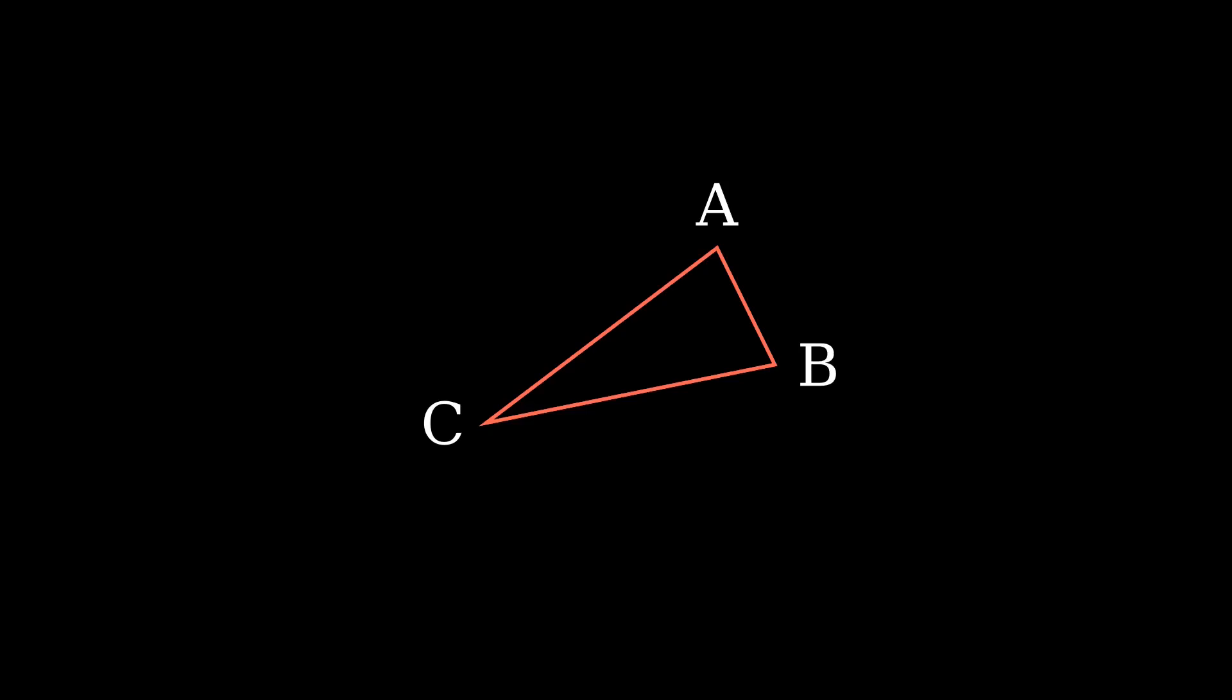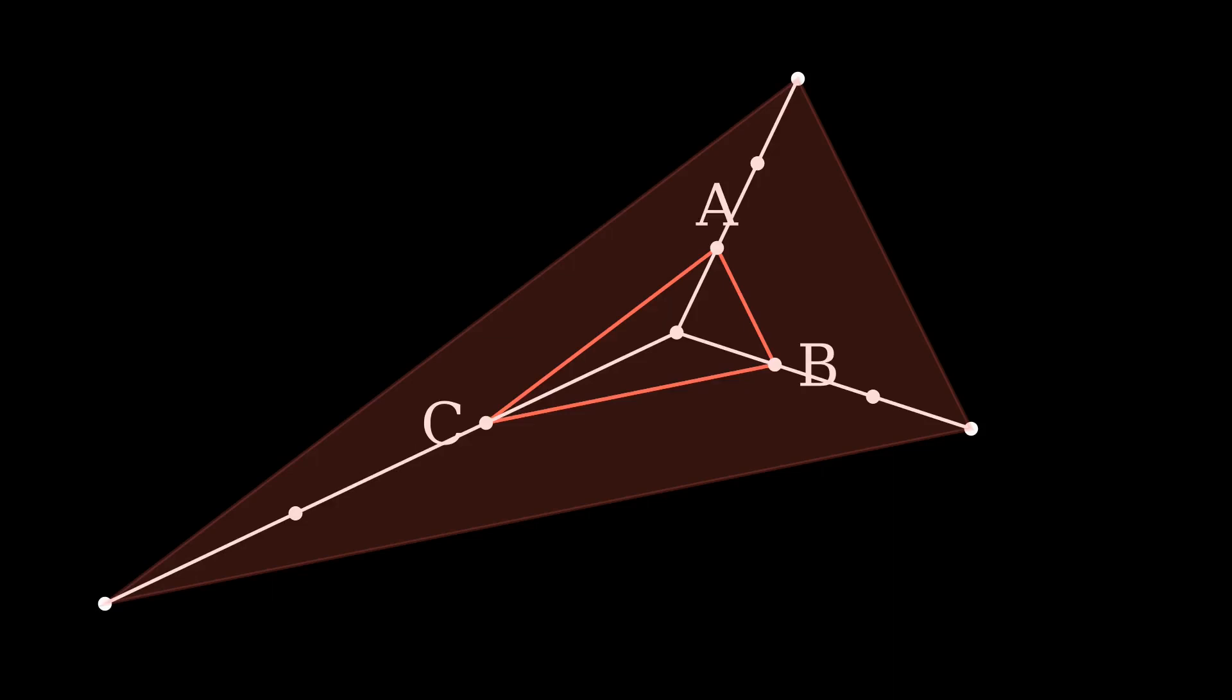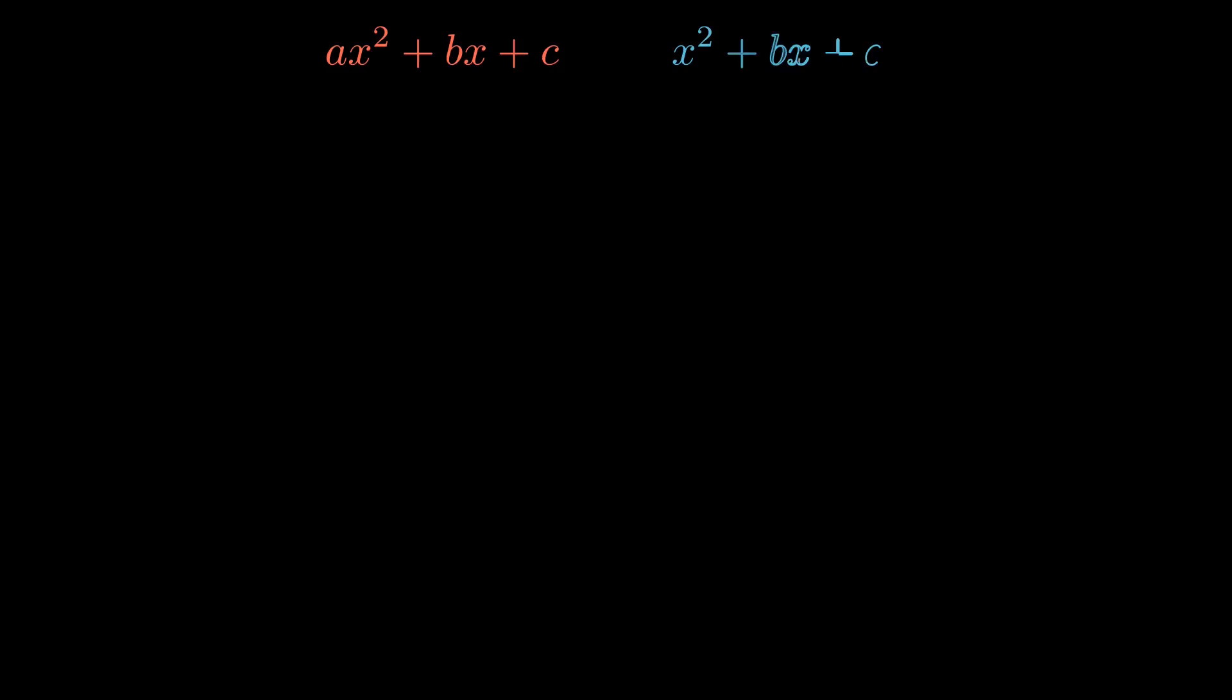But what if we wanted our center of dilation to be a different point? One way to do it would be to draw a line from that point to A. Then, we could extend that line, making it, say, 3 times as long. That's where we'll put point A in our new, scaled-up triangle. We can do the same for B and C, so that we end up making the three points of a new triangle. Because of the way that we constructed it, when you connect up the points on the new triangle with the points on the original, those lines are all guaranteed to go straight through your center of dilation. Now, this is the exact same behavior we saw with our parabolas. The line through their vertices would always go through the origin.